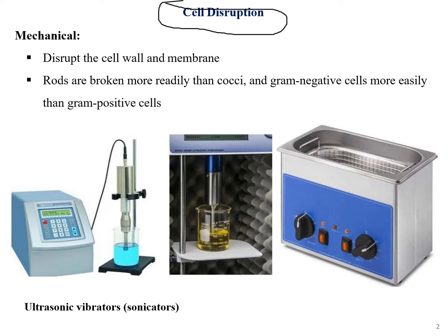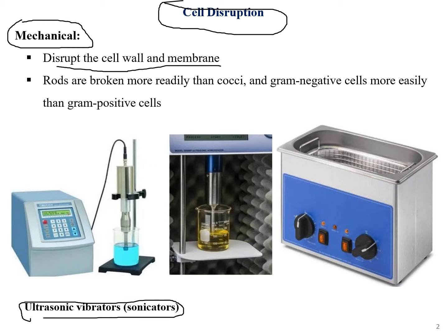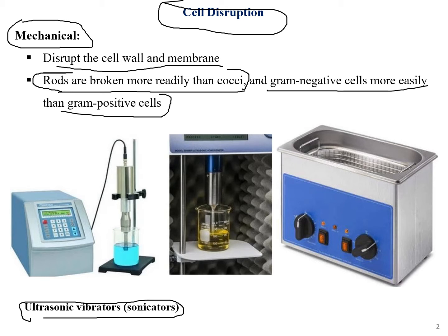Cell disruption is basically a mechanical technique. One such machine is the sonicator, as shown in the pictures. It disrupts the cell wall and membrane. Rods are broken more easily than cocci, and gram-negative cells are broken more easily than gram-positive cells, depending on the features of each bacterium.